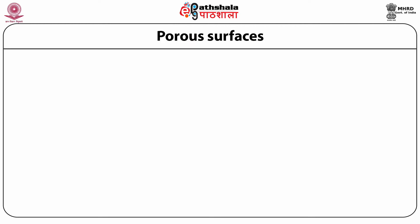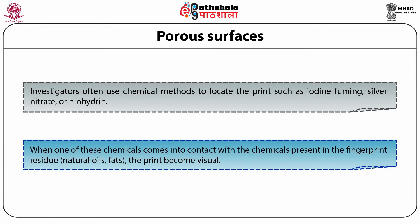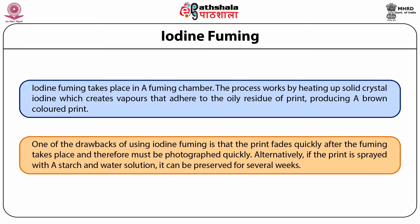For porous surfaces, investigators often use chemical methods to locate the print, such as iodine fuming, silver nitrate or ninhydrin. When one of these chemicals comes into contact with the chemicals present in the fingerprint residue — natural oils and fats — the print becomes visible. Iodine fuming takes place in a fuming chamber by heating solid crystal iodine, creating vapors that adhere to the oily residue of the print, producing a brown-colored print. One drawback is that the print fades quickly after fuming and must therefore be photographed quickly.